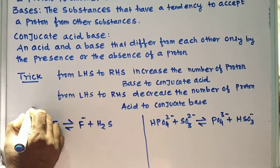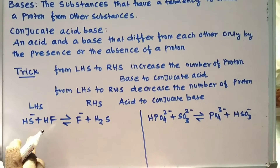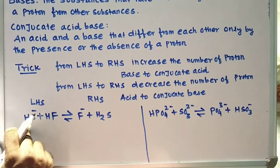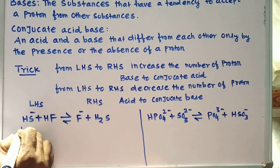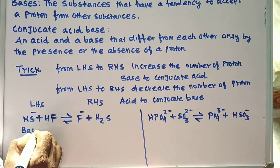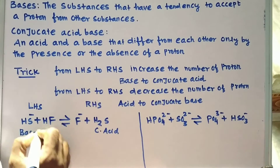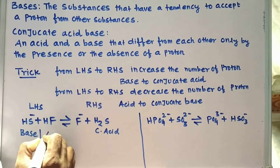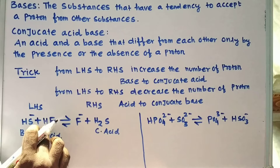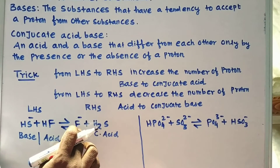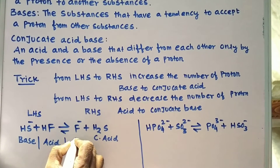Count the number of protons on the LHS and RHS. If from LHS to RHS there is a decrease in the number of protons, the species acts as an acid and forms its conjugate base. For example, if a species contains one proton on the LHS and no proton on the RHS, it has donated a proton and therefore acts as an acid, forming its corresponding conjugate base.